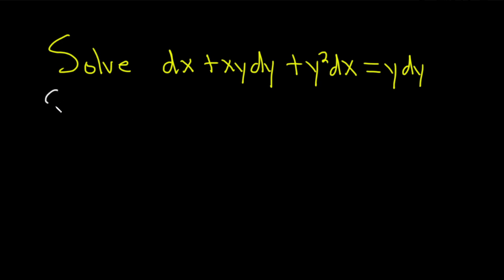And this should be separable. It doesn't look like it is, but let's try it. So let's try to just combine all the dx's and dy's. So here we have a dx, and here we have a dx, so we can pull out a dx. That's going to give us 1 plus y squared, and then dx.